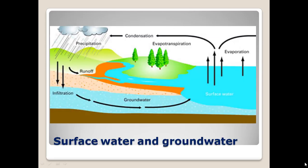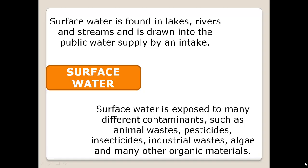There are two main types of sources of water: surface water and groundwater. Surface water is found in lakes, rivers, and streams, and is drawn into the public water supply by an intake.